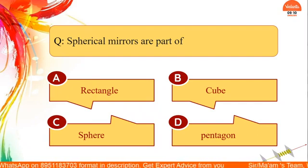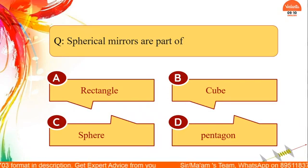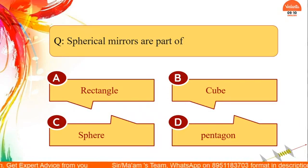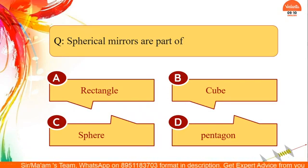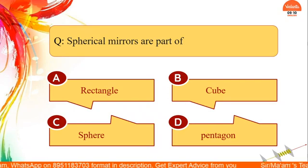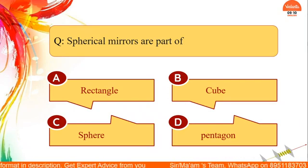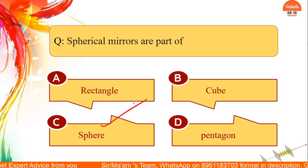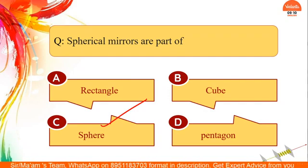Third question: spherical mirrors are part of what — a rectangle, a cube, a sphere, or a pentagon? The answer is a sphere. All spherical mirrors are originally a part of a sphere.